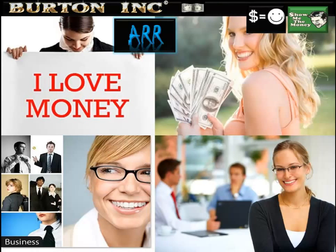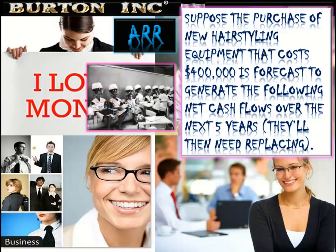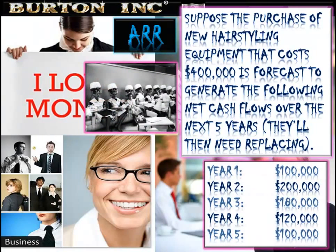We're going to run through an ARR calculation and show you how it's done — quite an easy one to get your head around. We're talking about the same salon and the same hair styling equipment, but this time using a different capital amount. We've shifted from $1 million used in the payback period example. The new hair styling equipment costs $400,000 and is forecast to generate the following net cash flows over the next five years.